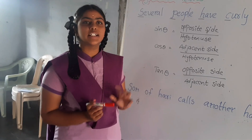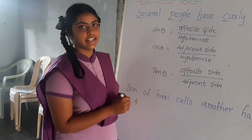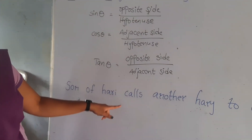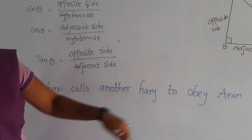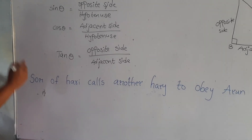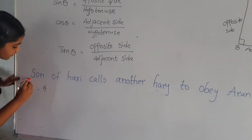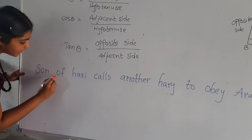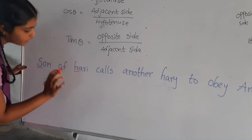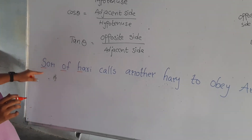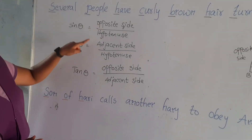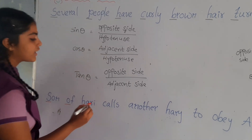We are going to learn another sentence: 'Son of Hari calls another Hari to obey Aram.' In this sentence, S stands for sin theta, O stands for opposite side, and H stands for hypotenuse. Sin theta is equal to opposite side by hypotenuse.